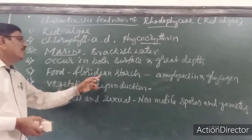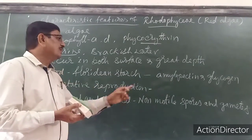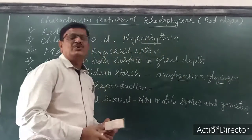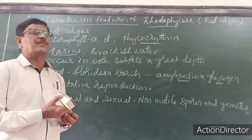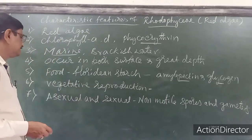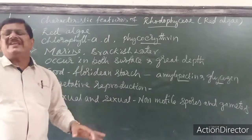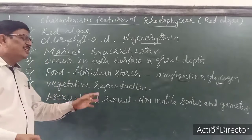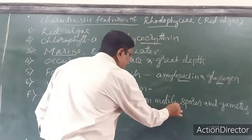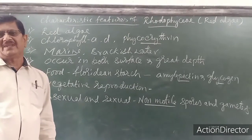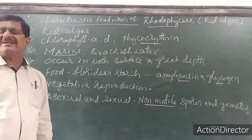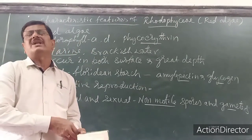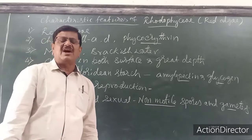The food is stored in the form of floridean starch, which is chemically similar to amylopectin and glycogen. Reproduction in Rhodophyceae includes vegetative reproduction by fragmentation, asexual reproduction producing non-motile spores carried by water, and sexual reproduction involving non-motile gametes.